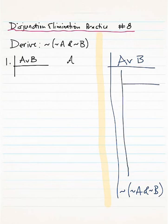So that tells us what we're going to have to do is start with NOT A and NOT B, and try to derive some sentence and its negation down here inside the sub-derivation. And then if we can do that, we'll be able to write NOT, NOT A and NOT B by negation introduction.